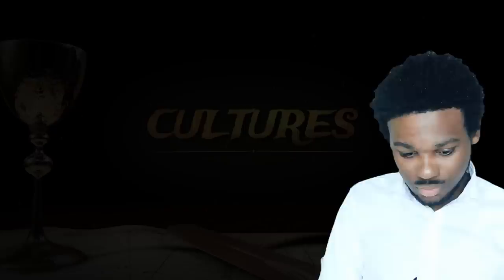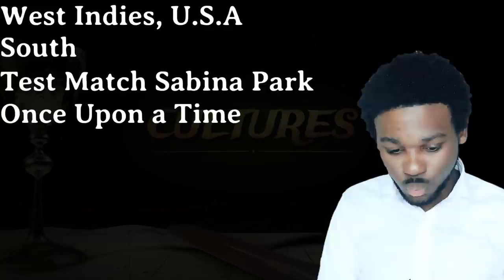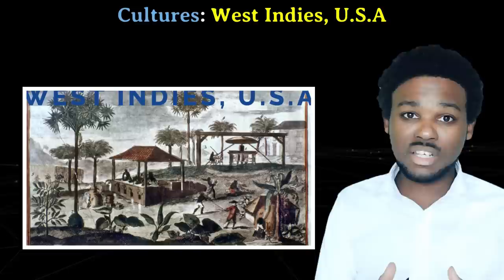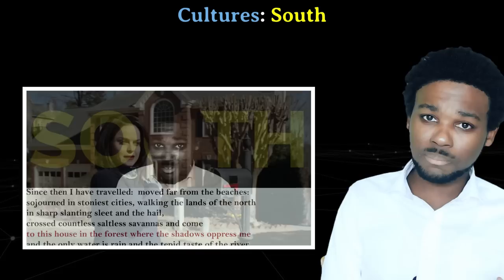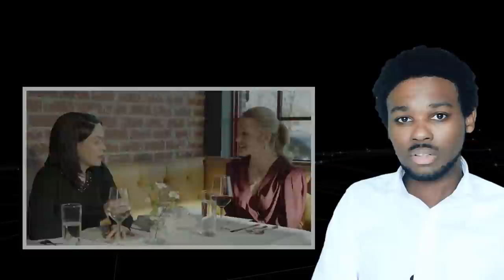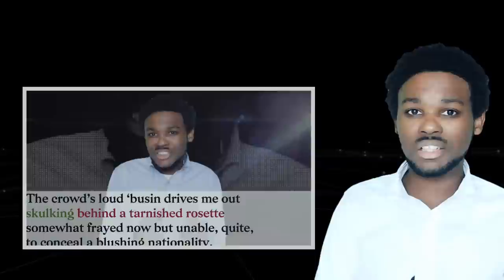Next theme: Cultures. The poems here are West Indies USA, South, Test Match Sabina Park, Once Upon a Time, and Theme for English B. In West Indies USA, many comparisons are made between the West Indies and the US, including the cultures of these two places. Cultural identities are important themes. South is quite similar — we see the culture and lifestyle of the Northern people compared to those of the Caribbean people. Test Match Sabina Park is lumped in with these two poems, as all three look at West Indian culture in comparison to other cultures. In this case, it is West Indies versus England.